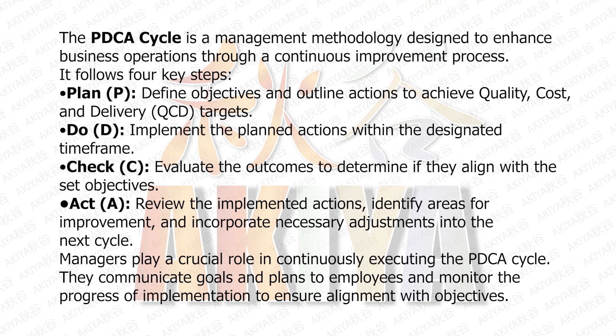The PDCA cycle is a management methodology designed to enhance business operations through a continuous improvement process. It follows four key steps: Plan (P) — define objectives and outline actions to achieve Quality, Cost, and Delivery (QCD) targets. Do (D) — implement the planned actions within the designated timeframe. Check (C) — evaluate the outcomes to determine if they align with the set objectives. Act (A) — review the implemented actions, identify areas for improvement, and incorporate necessary adjustments into the next cycle. Managers play a crucial role in continuously executing the PDCA cycle: they communicate goals and plans to employees and monitor the progress of implementation to ensure alignment with objectives.